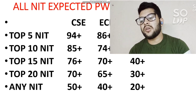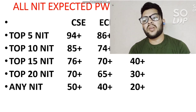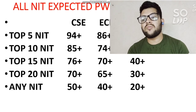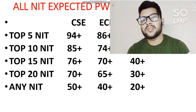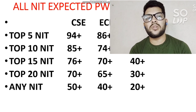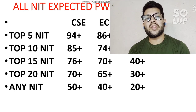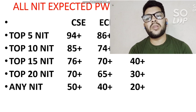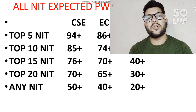If your percentile is somewhat less than these figures, you may still get admission because the cutoff for PWD candidates is very unpredictable. These are general estimates for the counseling. With better counseling, you can take advantage of seats at lower percentiles — many PWD students don't prefer certain NITs, so those seats may be available. If you want counseling guidance, you can contact me.